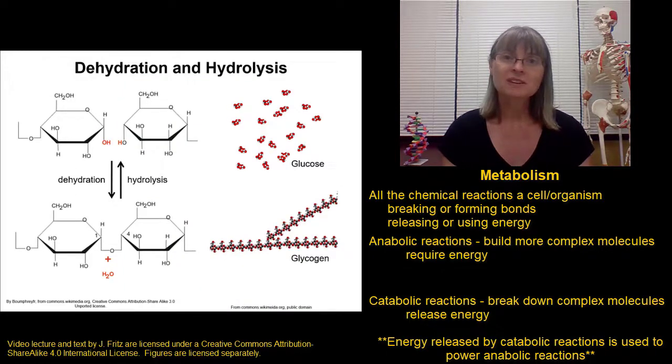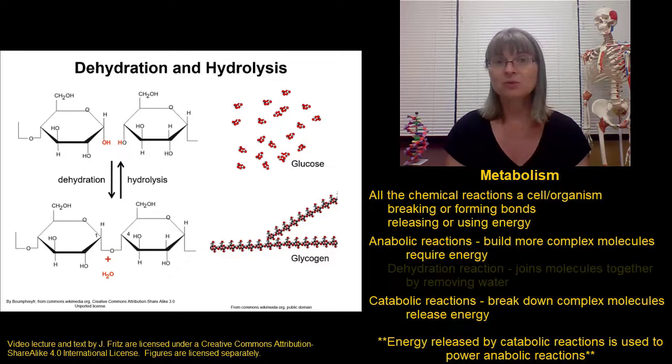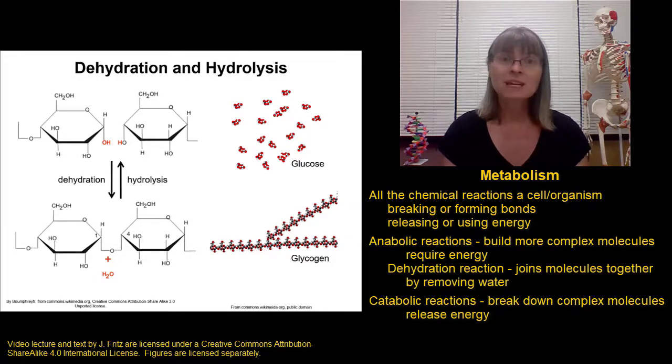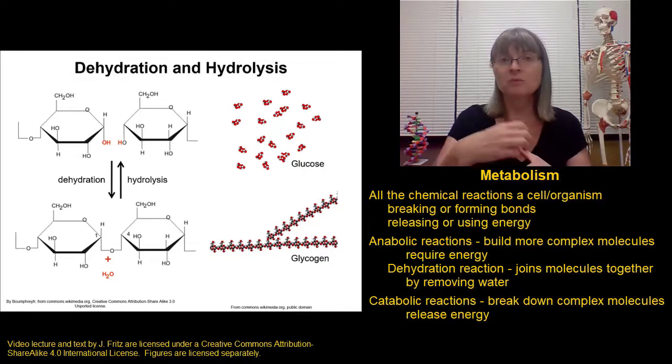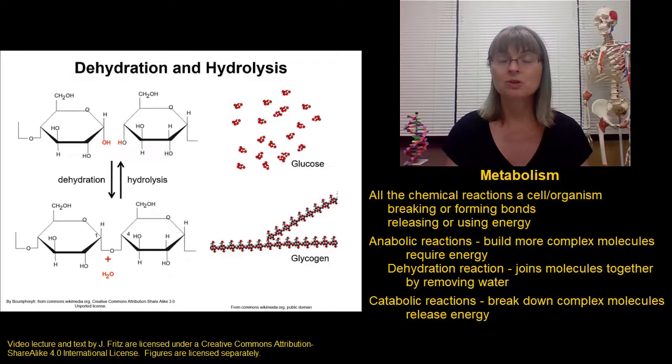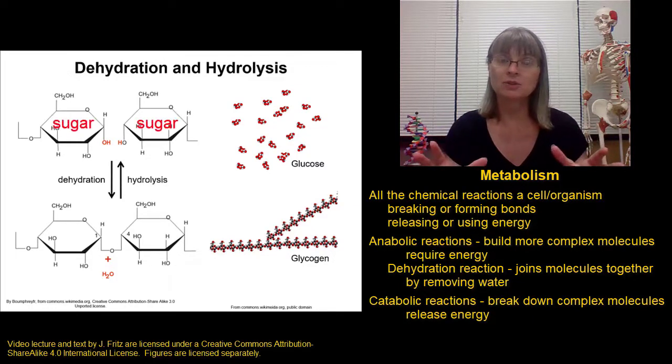One specific type of anabolic reaction is a dehydration reaction. Many of the complex molecules in our bodies are created by dehydration synthesis. This is where we join two smaller molecules together by removing a molecule of water. So if we take a look at the figure that's shown, we have two sugar molecules.